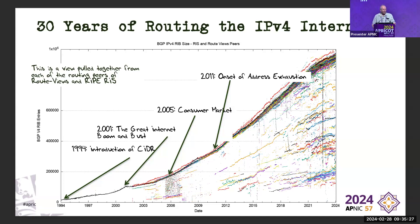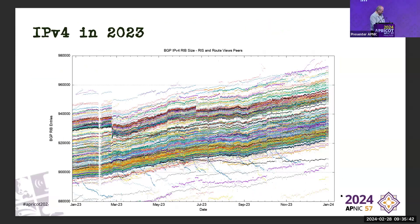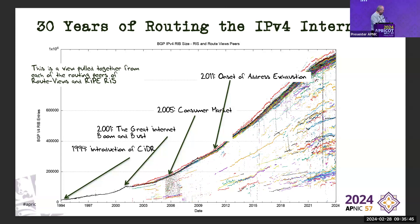You'll notice more folk join in over the ensuing period, and you start to see some of the major socioeconomic effects in that graph. In 1994 at the bottom left, this is when everyone thought, 'Oh my god, the internet's exploded, we cannot put all the routing table into our hardware, we're all going to die a horrible death.' And then classless inter-domain routing, CIDR, was introduced and it was, phew, disaster averted. And in the grand scheme of things, nothing happened. It really wasn't as big an issue as we thought.